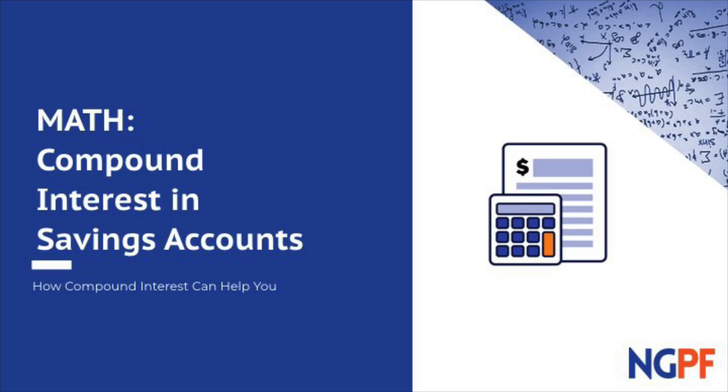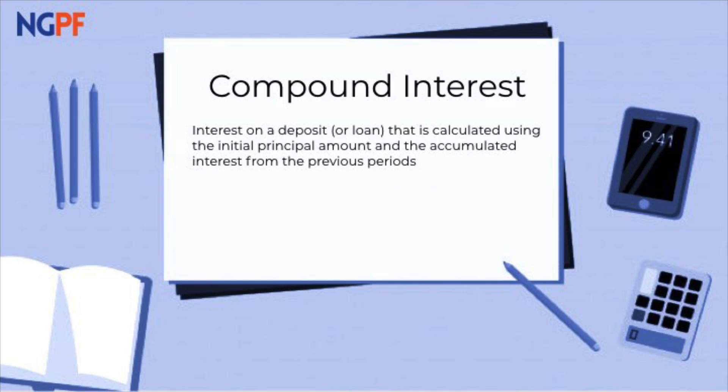Compound interest is earning interest on the interest you've already earned. Compound interest can work in your favor, like when you're depositing money into a savings or investment account, but it can also work against you, like when you're borrowing money for a loan, which you can learn about in our other video, Compound Interest Pitfalls.